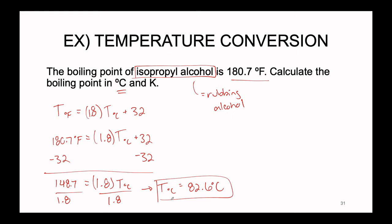82.6°C gives us water's perspective: water boils at 100°C, so 82.6°C is lukewarm to a water molecule. The boiling point of isopropyl alcohol is no big deal to water — it's like the equivalent of us walking outside on a 75–80°F day: warm but doable.